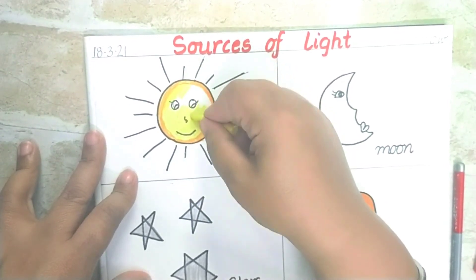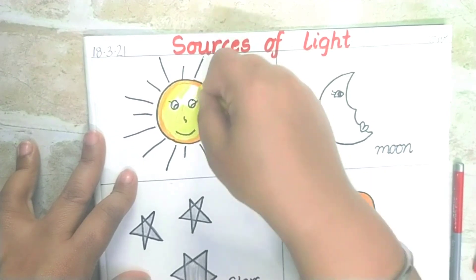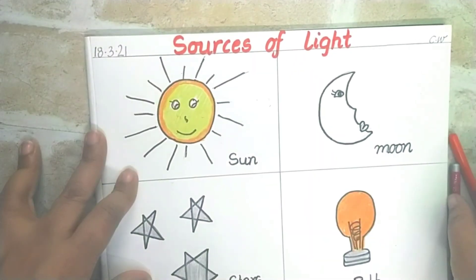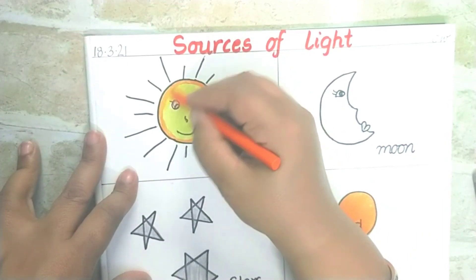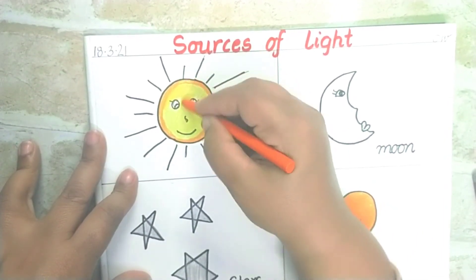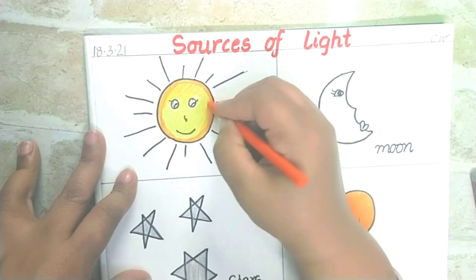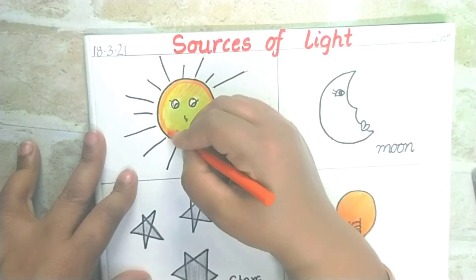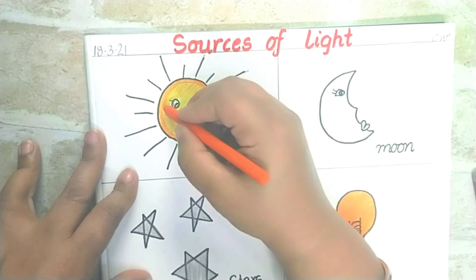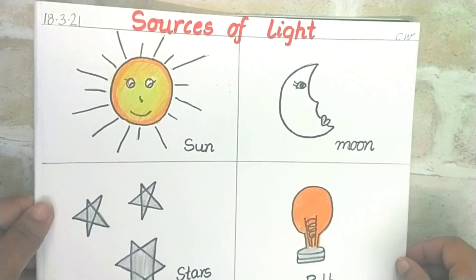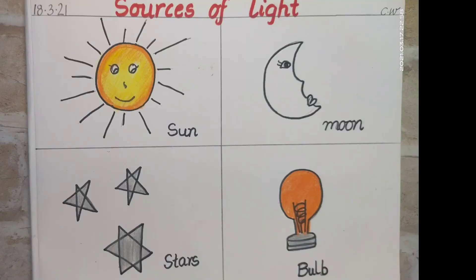And I am going to shade it one more time with orange color. This is our sun — sun is done! Our stars are done too. We have drawn a bulb. Now what about moon? Moon will stay like this because moon is of white color. So today we have drawn sources of light: sun, moon, stars, and bulb.